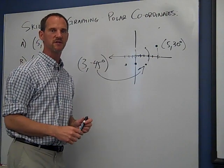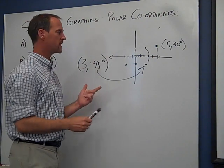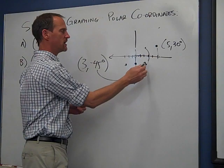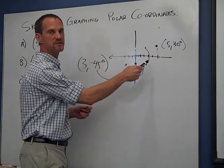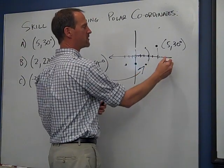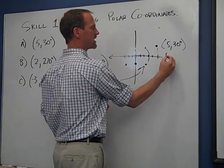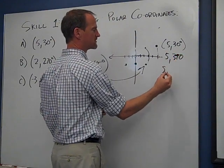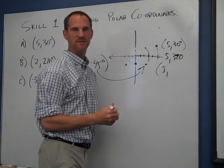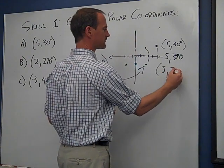But one of the important differences with polar is that you can get to the same point many different ways. In fact, every time you go around 360 degrees, you'll get to the same point. So 5, 30 is exactly the same as 5, 390 is exactly the same as 5, and 360 would be, what, 750. Okay?